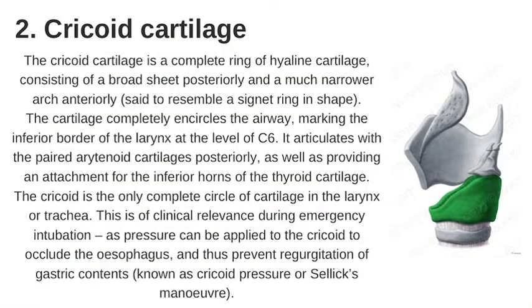Cricoid cartilage: the cricoid cartilage is a complete ring of hyaline cartilage, consisting of a broad shape posteriorly and a much narrower arch anteriorly, said to resemble a signet ring in shape. The cartilage completely encircles the airway, marking the inferior border of the larynx at the level of C6. It articulates with the paired arytenoid cartilages posteriorly, as well as providing an attachment to the inferior horns of the thyroid cartilage. The cricoid is the only complete circle of cartilage in the larynx or trachea — this is of clinical relevance during emergency intubation, as pressure can be applied to the cricoid to occlude the esophagus and prevent regurgitation of gastric contents, known as cricoid pressure or Sellick's maneuver.